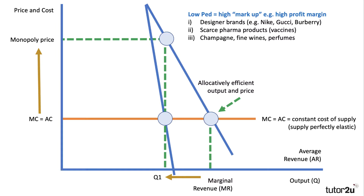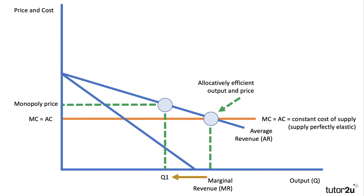Products with low price elasticity of demand tend to be high markup goods. The lower the elasticity, the greater the difference between price and cost. Think about designer brands like Nike trainers or Burberry jackets, scarce vaccines, pharmaceutical products where low elasticity would allow higher prices. Think also about conspicuous consumption goods — champagne, fine wines, expensive perfumes — where the price charged is way above the marginal cost of supply.